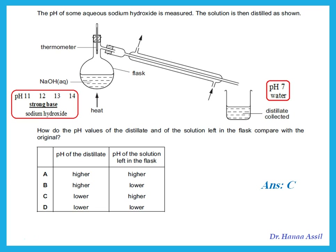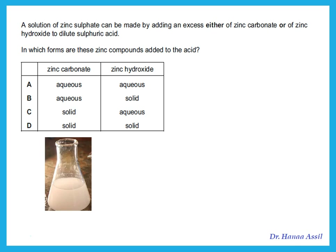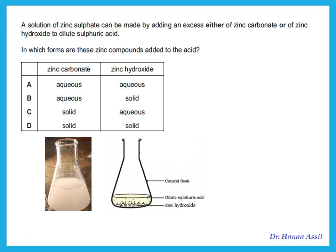A solution of zinc sulfate can be made by adding excess zinc carbonate or zinc hydroxide to dilute hydrochloric acid. When you add excess of the solid, that is the neutralization method. The neutralization method uses insoluble substances — both zinc carbonate and zinc hydroxide are insoluble — so you add them as solids. You add excess solid zinc carbonate to the acid and then filter. The answer is D.